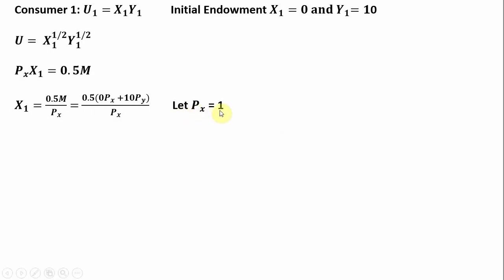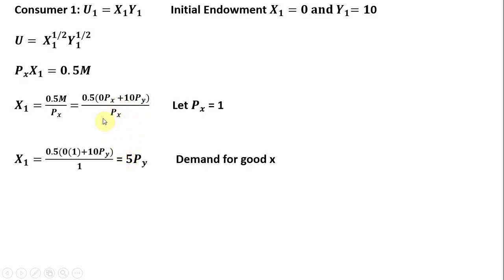First, we're going to normalize the price of good x to 1. We also need to figure out what income is. Income is just the initial endowment times the respective price of that good — so 0 units of good x times the price of good x, plus 10 units of good y times the price of good y. Making the substitutions, the price of good x is 1, and simplifying, the demand for good x is 5 times the price of good y.